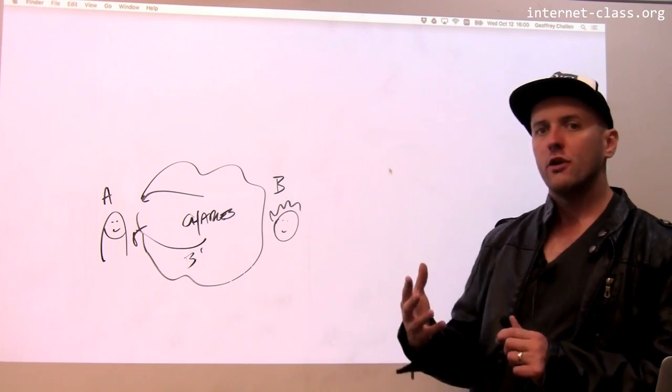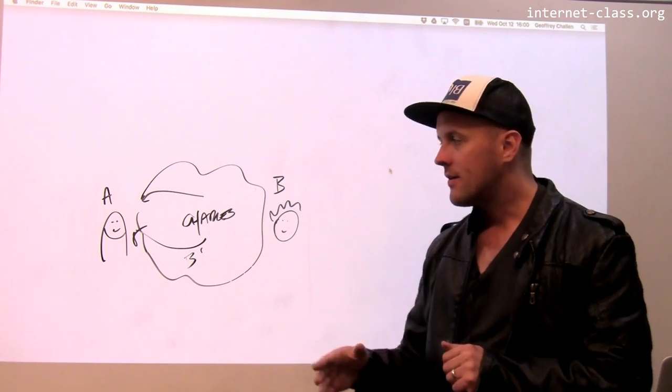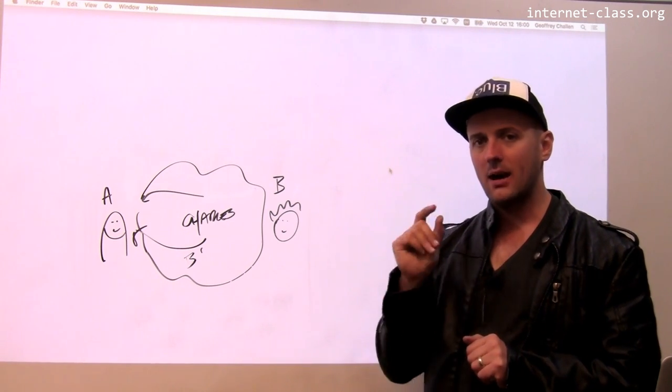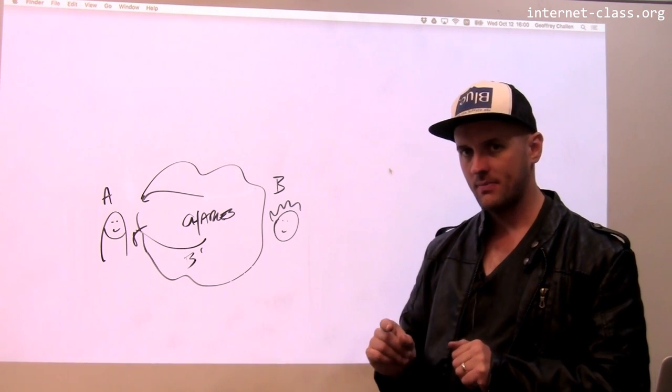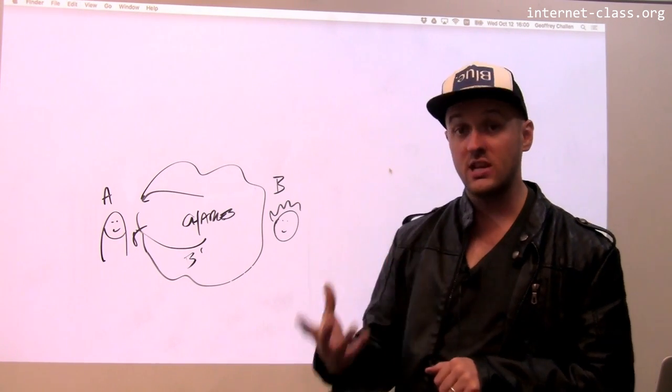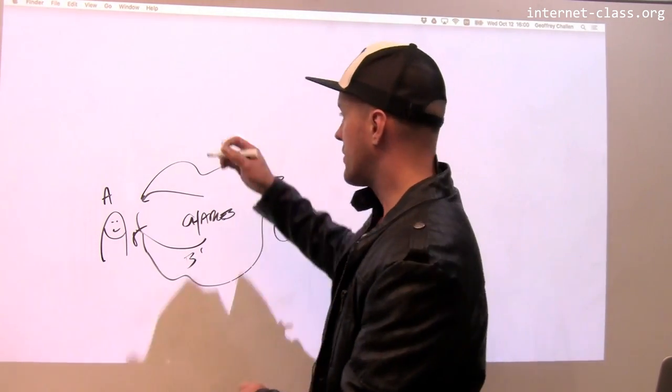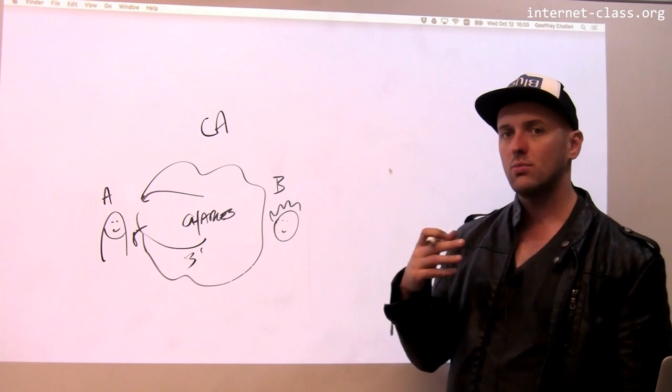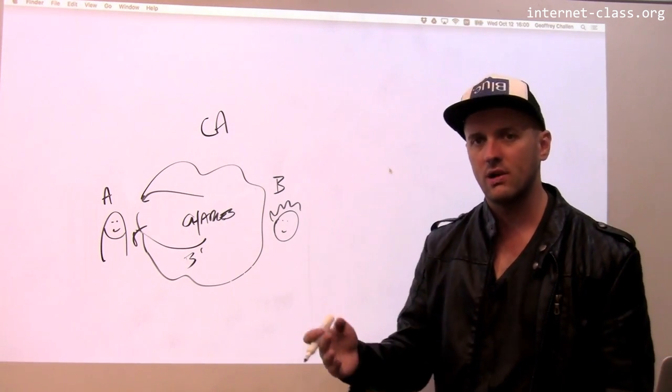So what do we need to solve this problem? We need some way for Alice to know that she actually got Bob's public key. And so this is where the idea of a certificate authority comes into play. Certificate authorities are entities that have been established that provide what we can think of as a root of trust.